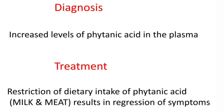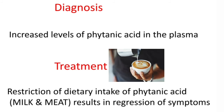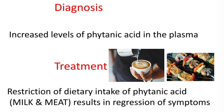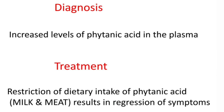Coming to treatment, the person should restrict dietary intake of phytanic acid, present in milk and meat as major sources. Whenever the person avoids these dietary sources, regression of symptoms is observed.